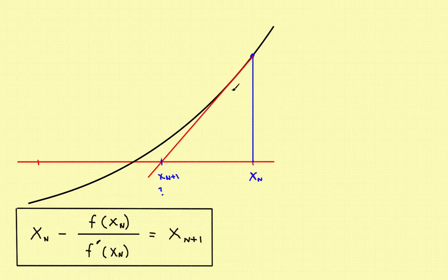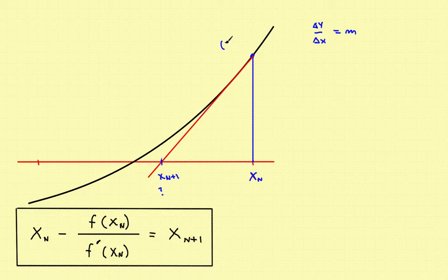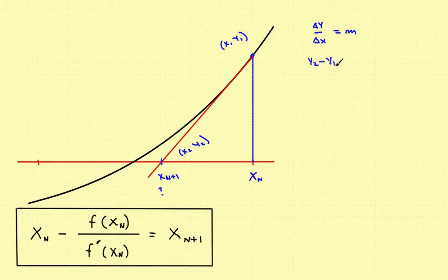The slope of that tangent line — the red line — is the change in y divided by change in x. In general terms, the first point up on the function we'll call x1, y1, and the second point down on the x-axis we'll call x2, y2. So the change in y, which is y2 minus y1, divided by x2 minus x1, equals the slope.